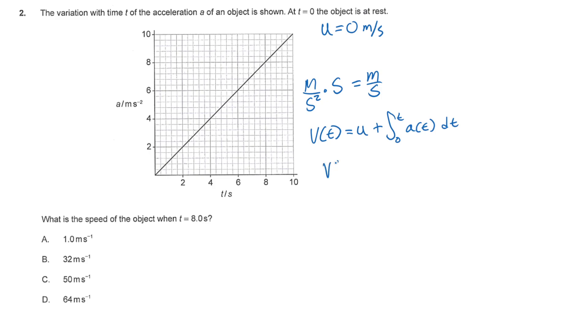So for our case, we're trying to find the velocity at t equals 8 seconds, and our initial velocity is 0, so we can substitute that in. That means the velocity at 8 seconds is just the integral from 0 to 8 of the acceleration dt.